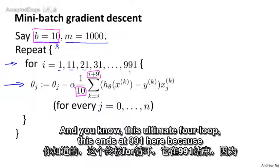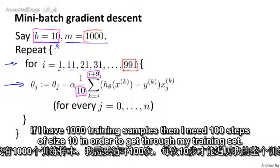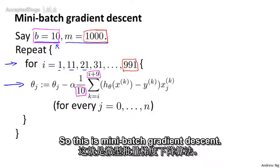And this outermost for loop ends at 991 here because if I have a thousand training examples then I need a hundred steps of size 10 in order to get through my entire training set. So this is mini-batch gradient descent.